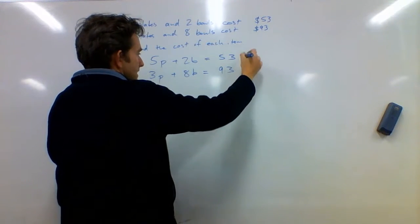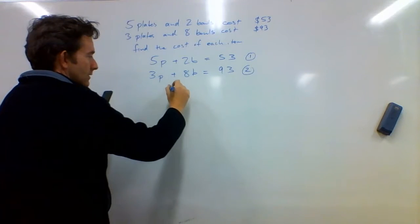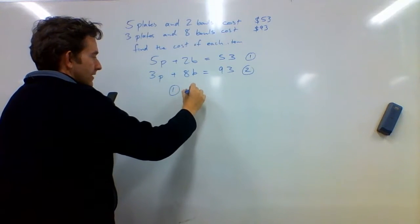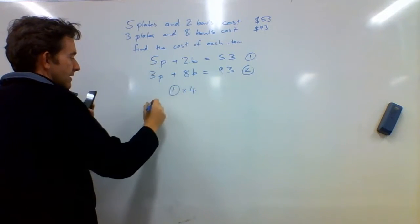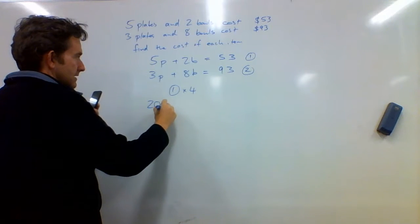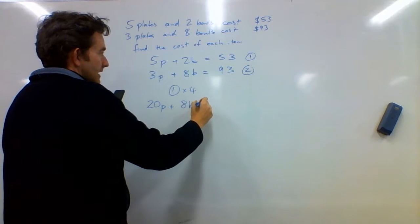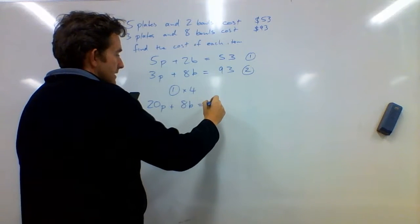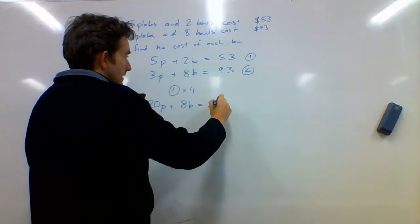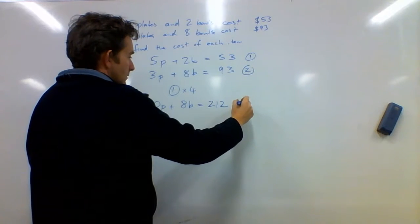I'll call that equation 1 and equation 2. I'm going to get equation 1 and multiply it by 4. 4 times 5 is 20p plus 4 times 2, which is 8b, being equal to 4 times 53, which is 212. Call that equation 3.